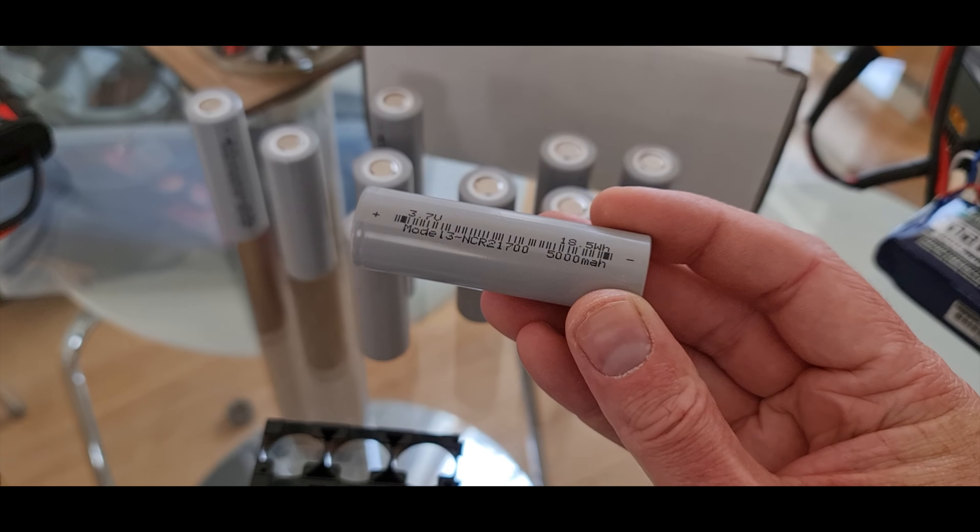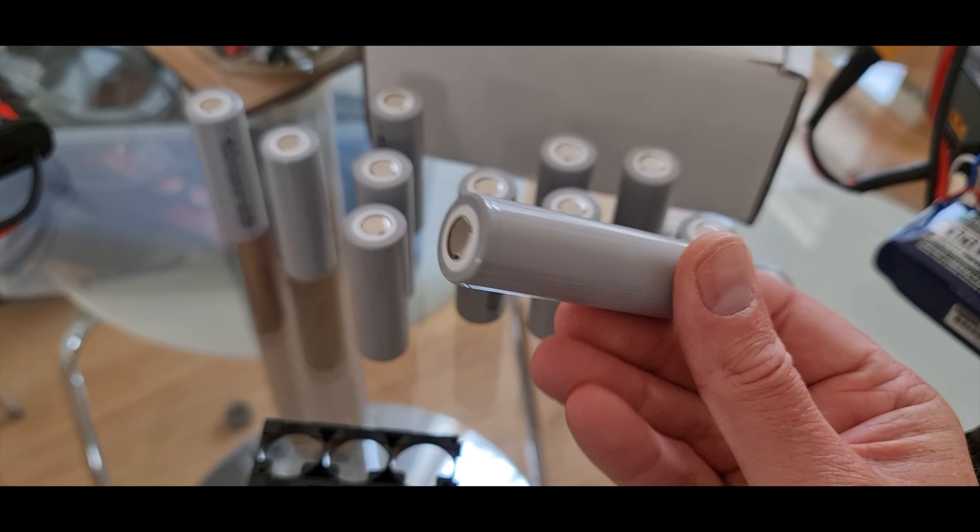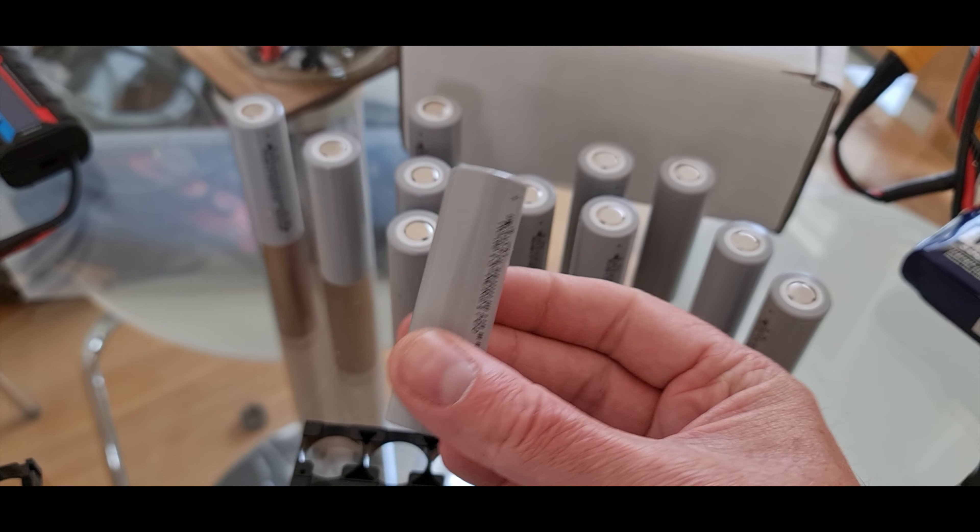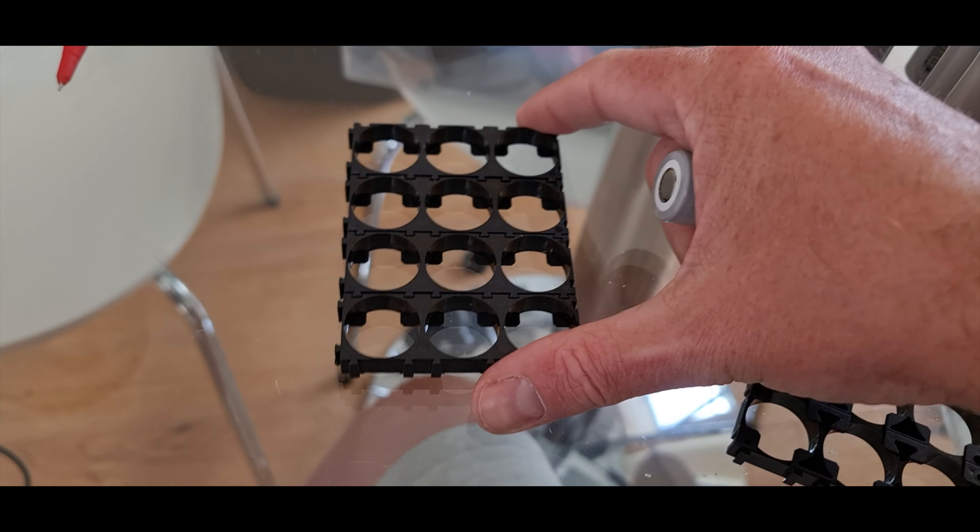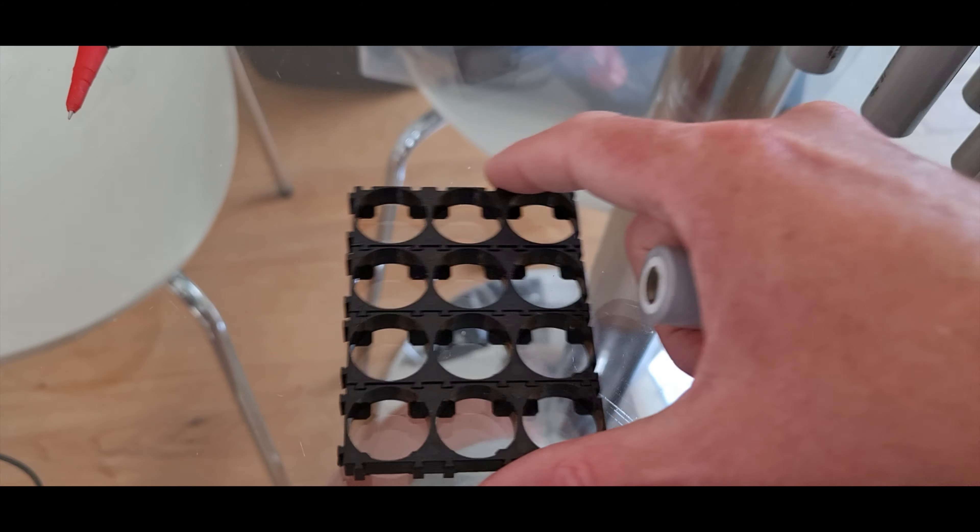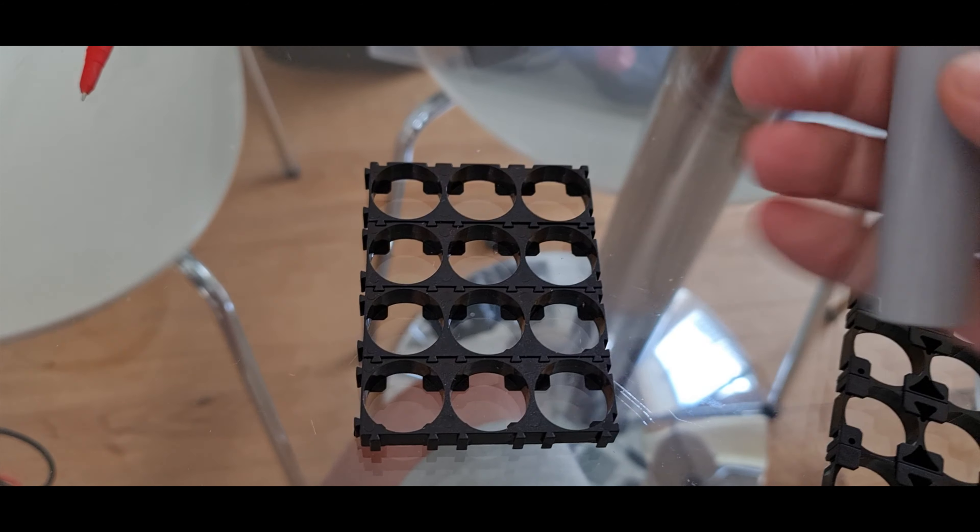Here's the cells. These are 5,000 milliamp hour cells, 3.7 volts each. You can see there it's quite a lot of power in one cell. These are lithium ion.